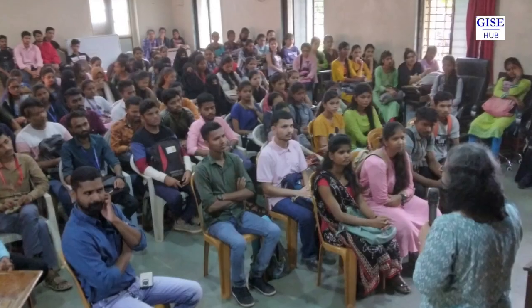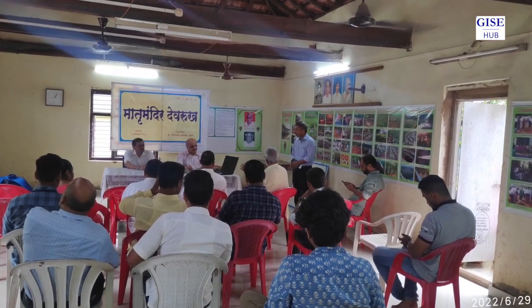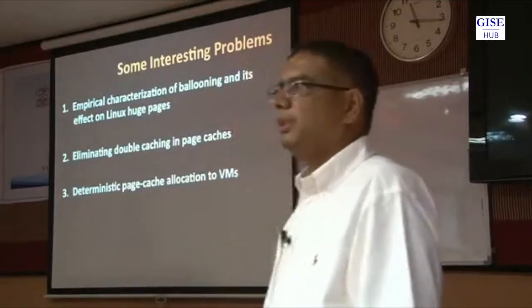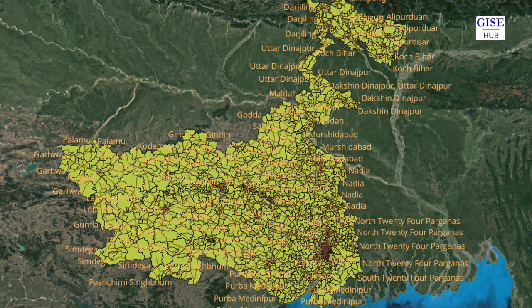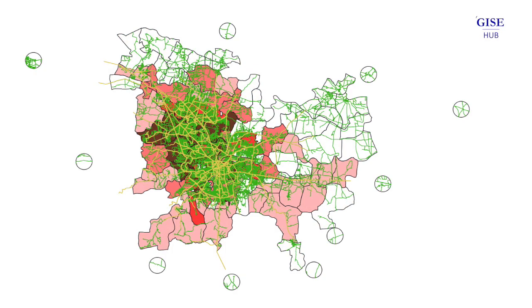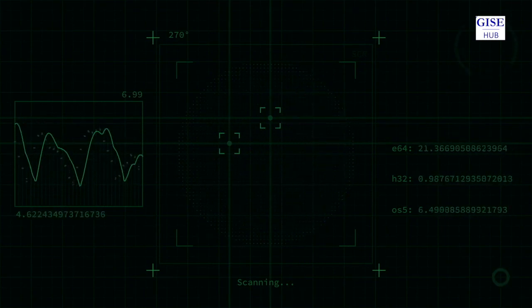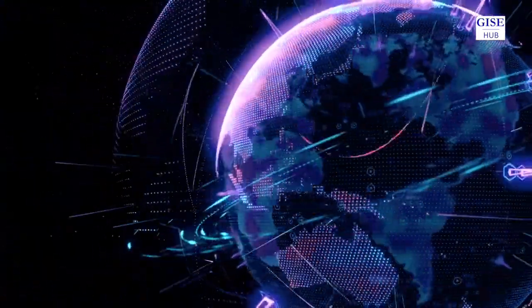The GIC Hub is actively looking forward to collaborating with central, state, and international agencies. Another important objective is to translate the research and solutions developed here into technologies and products that can then be taken out to the real world.